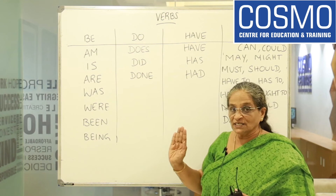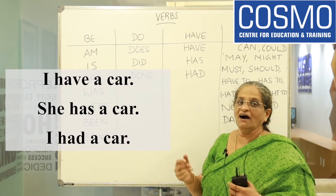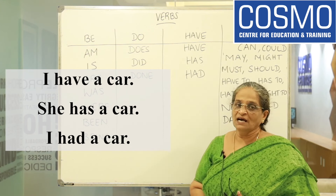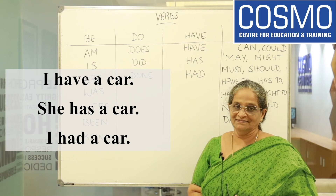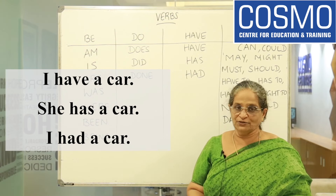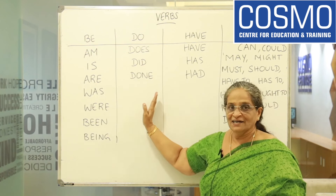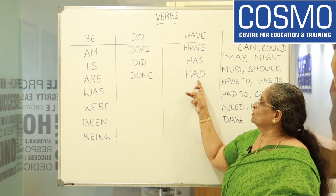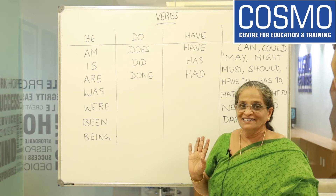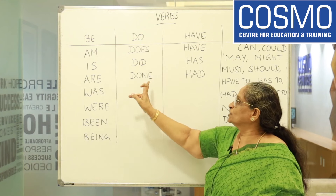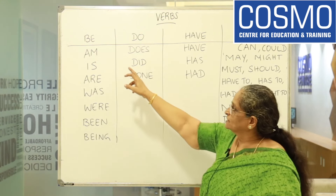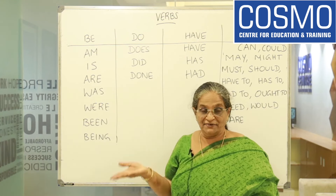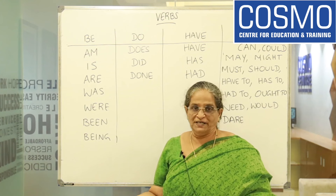HAVE, HAS, HAD. These mean possession. 'I have a car.' For singular third person: 'She has a car.' For past: 'I had a car.' HAVE/HAS/HAD also form perfect tenses. 'I have been here for 20 years' — it shows a continuing state from the past to now.